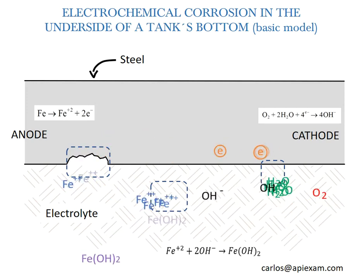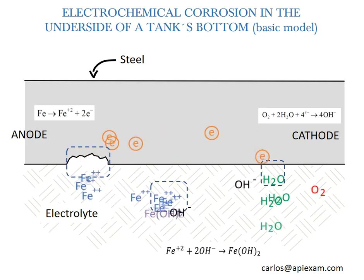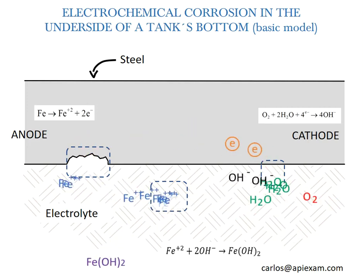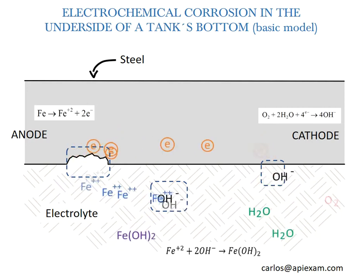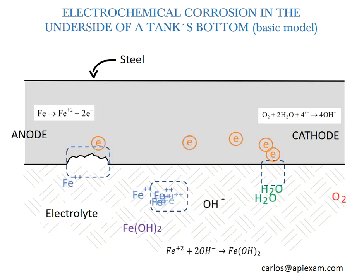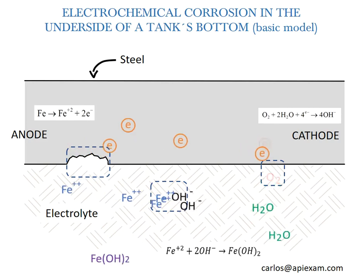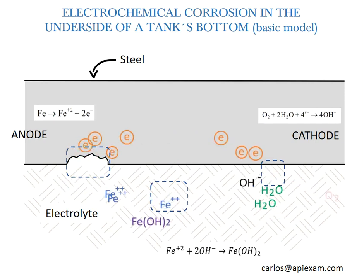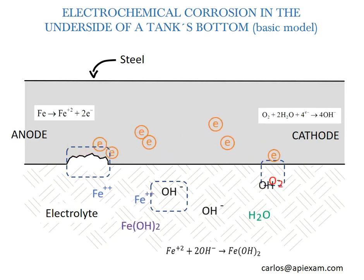Remember that this is a simple model. In the anode, iron cations are released. These cations react with hydroxide anions liberated at the cathode and create hydrated iron. This hydrated iron, in turn, deposits itself over the surface of the steel and creates more corrosion processes. All of this happens at a microscopic scale, but in time, these corrosion processes extend all over the underside of the bottom.